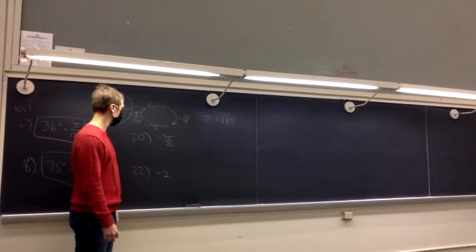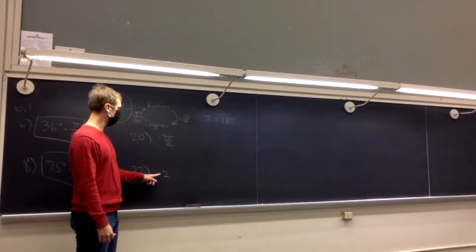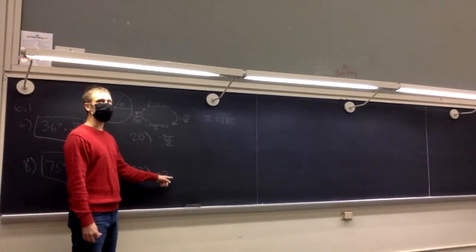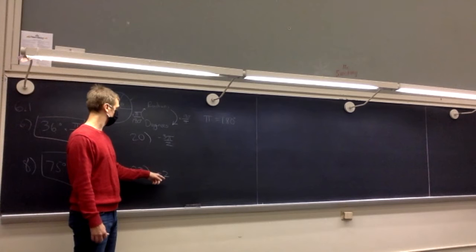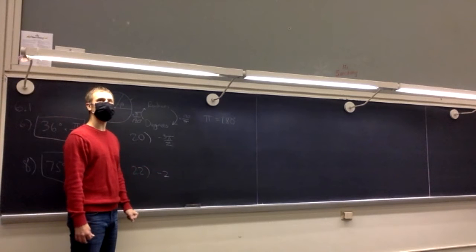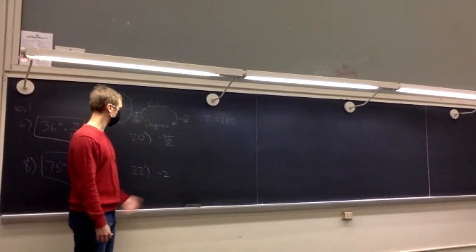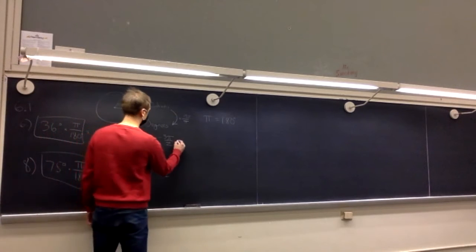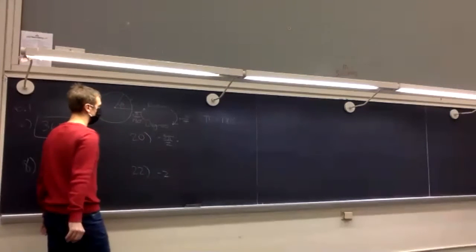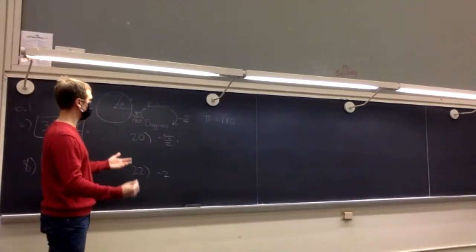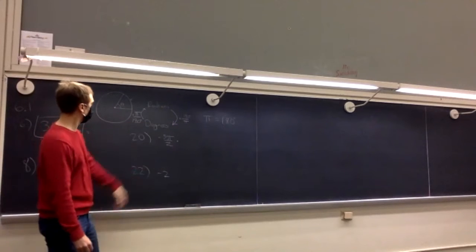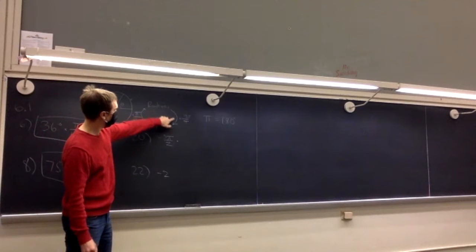One thing to keep in mind — this is the trick — you don't have to have a π for it to be radians. This is negative two radians even though there's no π. That confuses people from time to time, because typically when you do these problems there is a π that nicely cancels out with what you multiply by.